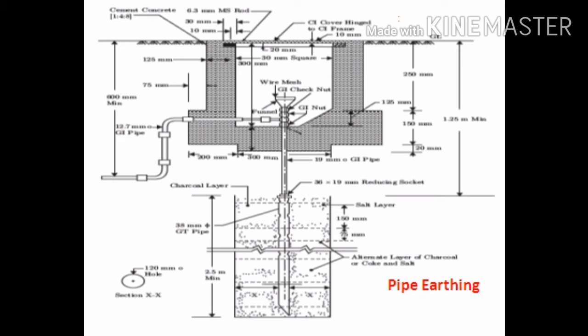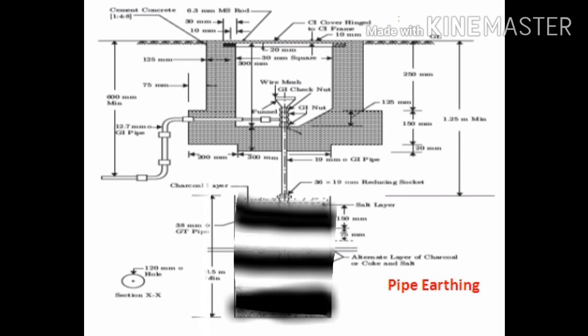In this method, under the ground, from a depth of 1.25 meter to 3.75 meter, a cuboidal pit of 300 millimeter by 300 millimeter by 2.5 meter is dug. In this pit, a GI pipe of 38 millimeter in diameter and 2.5 meter in length is placed vertically. Around this pipe, layers of salt and charcoal of height 150 millimeter are laid.